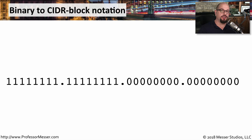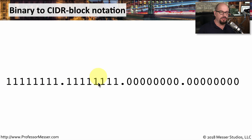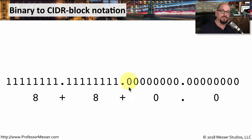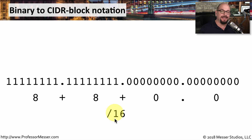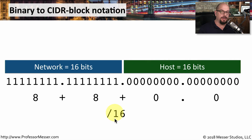Let's perform some conversions between the binary representation of the subnet mask and the CIDR block or slash notation. I have a subnet mask here written out in binary, which has all ones in the first two octets and all zeros in the last two octets. We add up the number of ones — eight plus eight plus zero plus zero — which gives us slash 16. That means our network is going to be 16 bits long and the host values are also going to be 16 bits long.